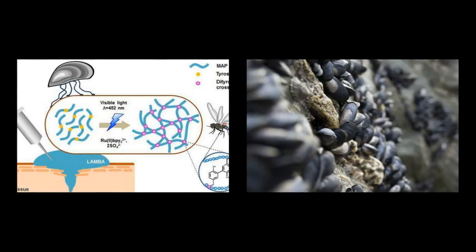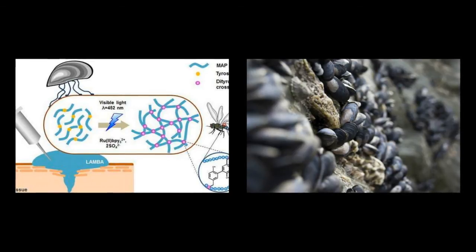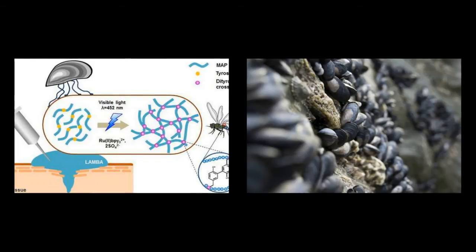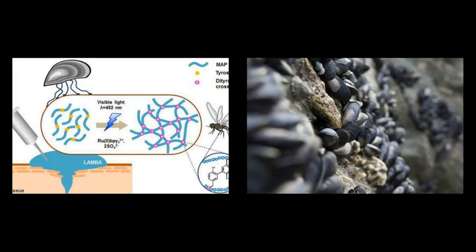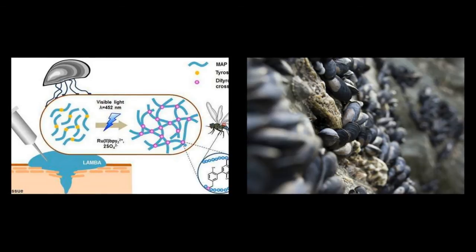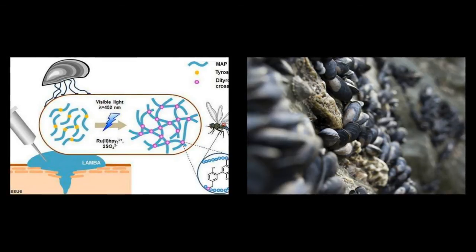This process boosts both their strength and stickiness. The team found that when they took mussel proteins chock full of tyrosines and exposed them to blue visible light, the photochemical reaction saw them instantly pair up to form these tyrosine intersections.